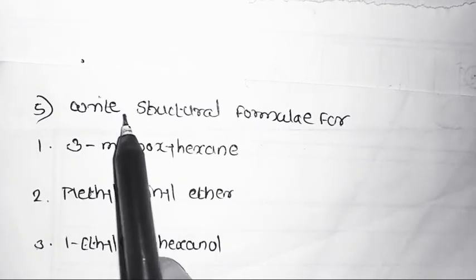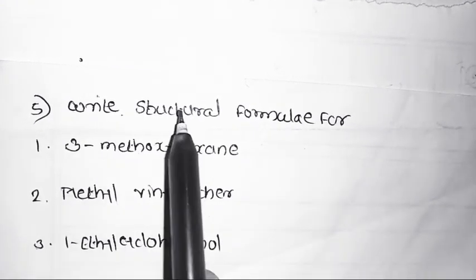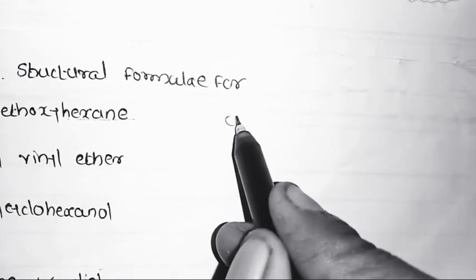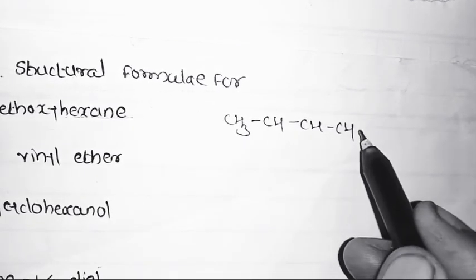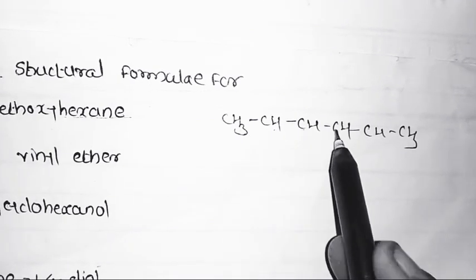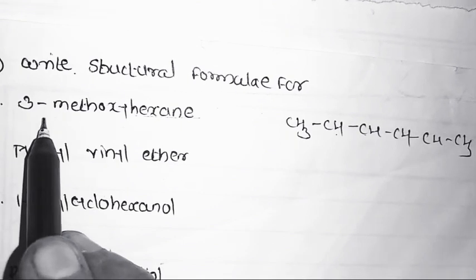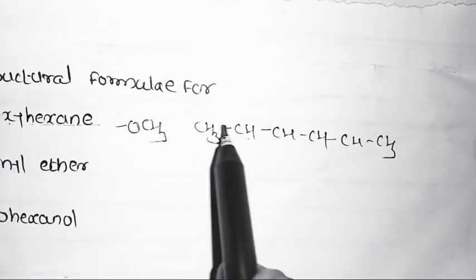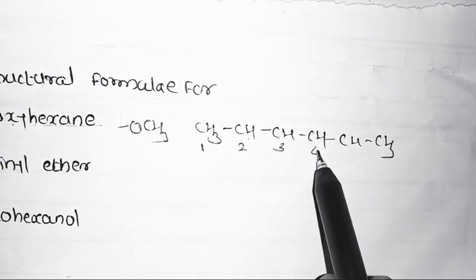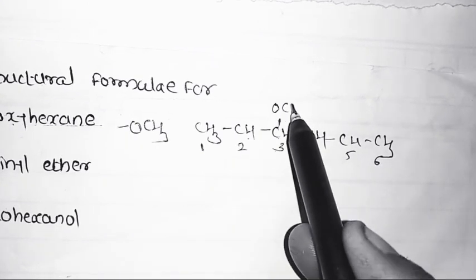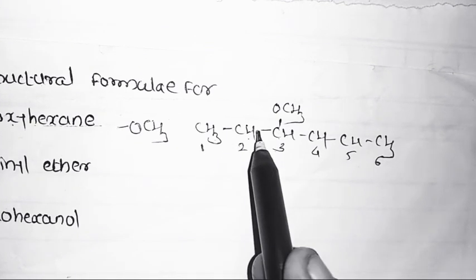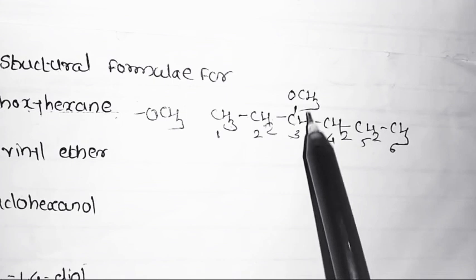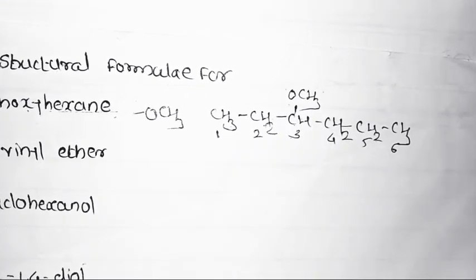Next question: write structural formulas for the following names. First, 3-methoxyhexane. Parent chain is hexane — a straight chain of 6 carbons: CH3-CH2-CH2-CH2-CH2-CH3. At position 3, a methoxy group (OCH3) is attached. Numbering: 1, 2, 3, 4, 5, 6 — OCH3 is attached at carbon 3. This is the structural formula of 3-methoxyhexane.